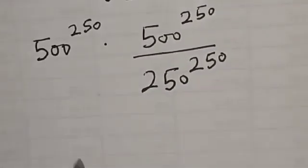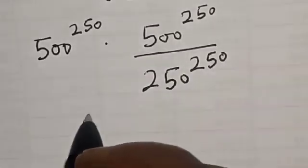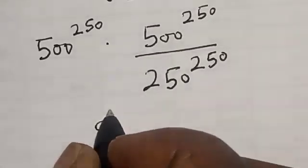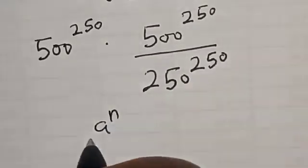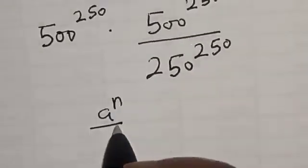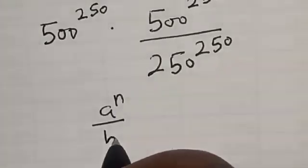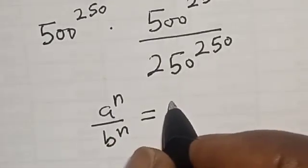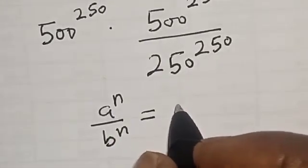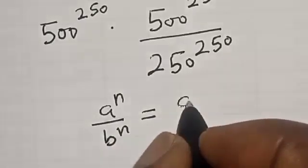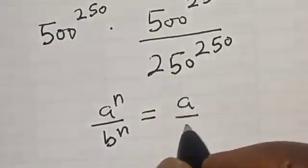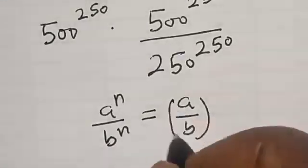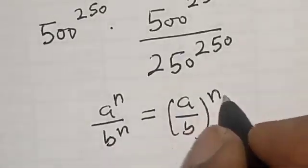Also remember that if you have a raised to power n divided by b raised to power n, this is equal to a divided by b, raised to power n.